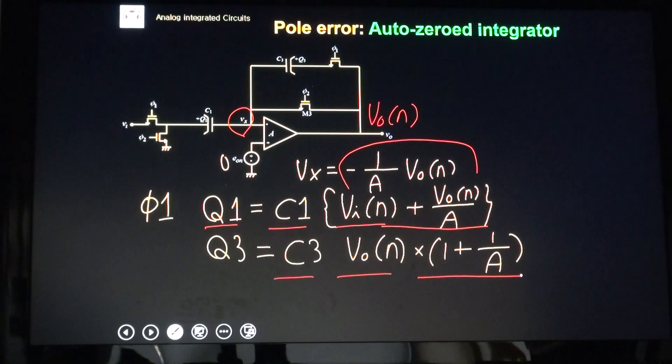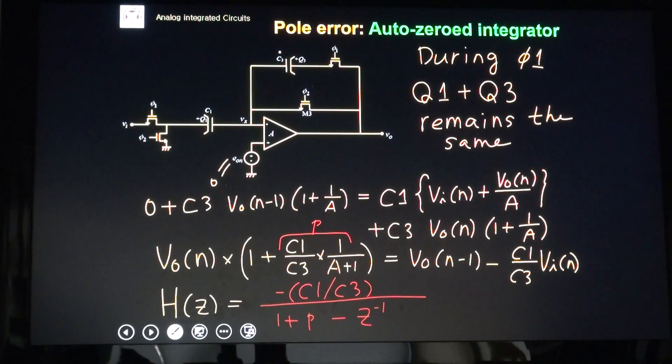Similarly, during φ1, op-amp summing node does not have any DC path. This node does not have any DC path to outside world. So, the total charge remains the same during φ1 phase. This is Q1 plus Q3 at the end of preceding φ2 phase, which is the same as Q1 plus Q3 at the start of φ1 phase. This is Q1 plus Q3 at the end of φ1 phase.